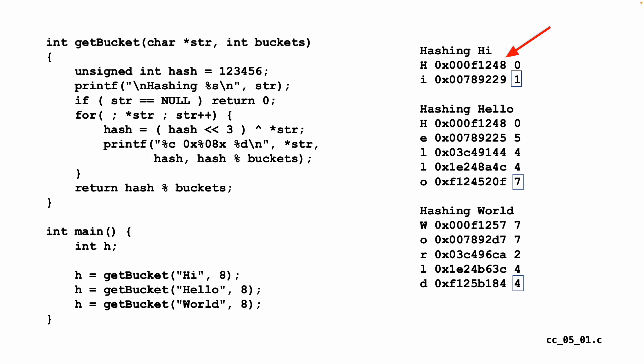But at the very end it says return hash percent buckets, which takes the modulo operator of the number of buckets. In this case I'm going to be using eight buckets just to run the hash function—give me the bucket for this string.